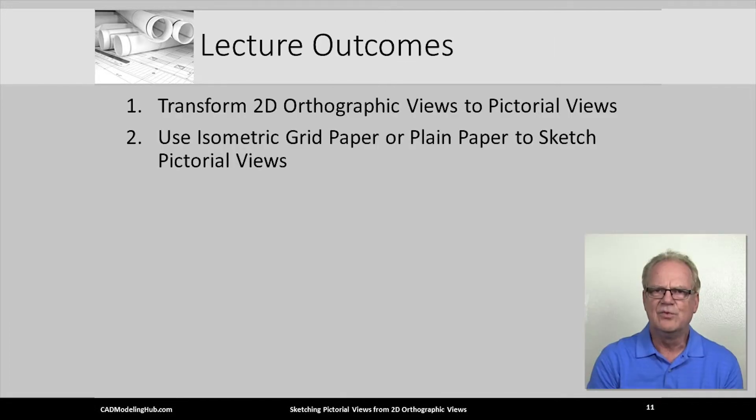Let's review what you should have or now be able to discuss. How are 2D orthographic views transformed into a 3D pictorial view? How does isometric graph paper assist in the transformation of 2D orthographic views into a 3D pictorial view?